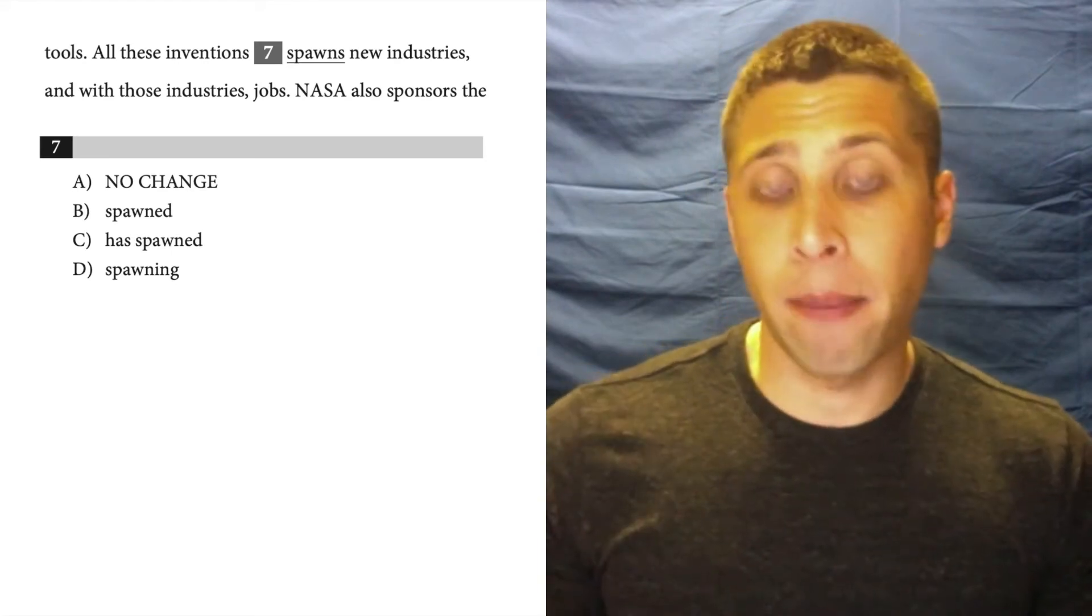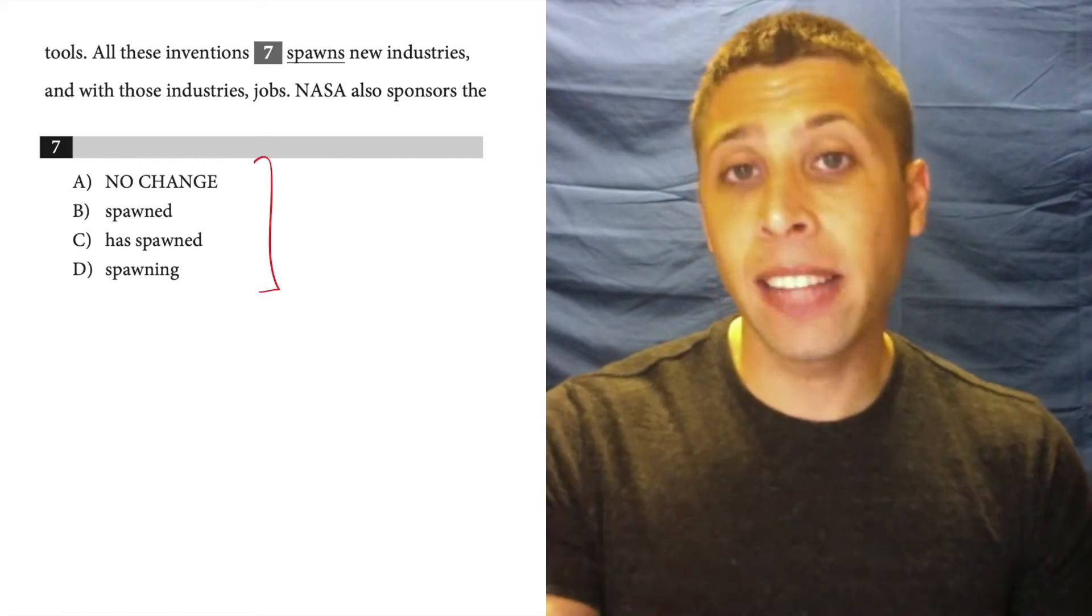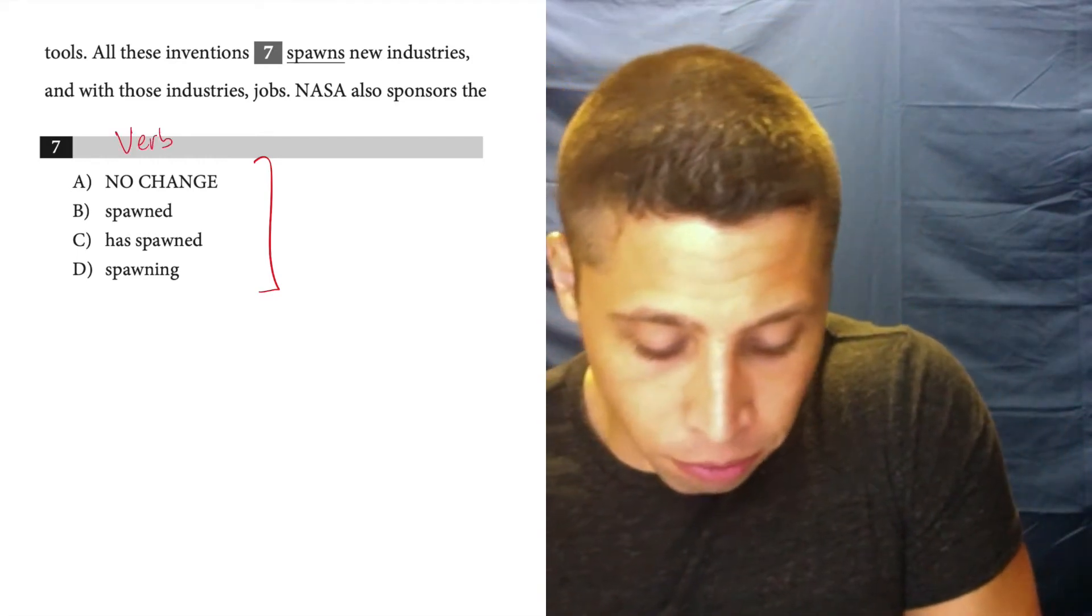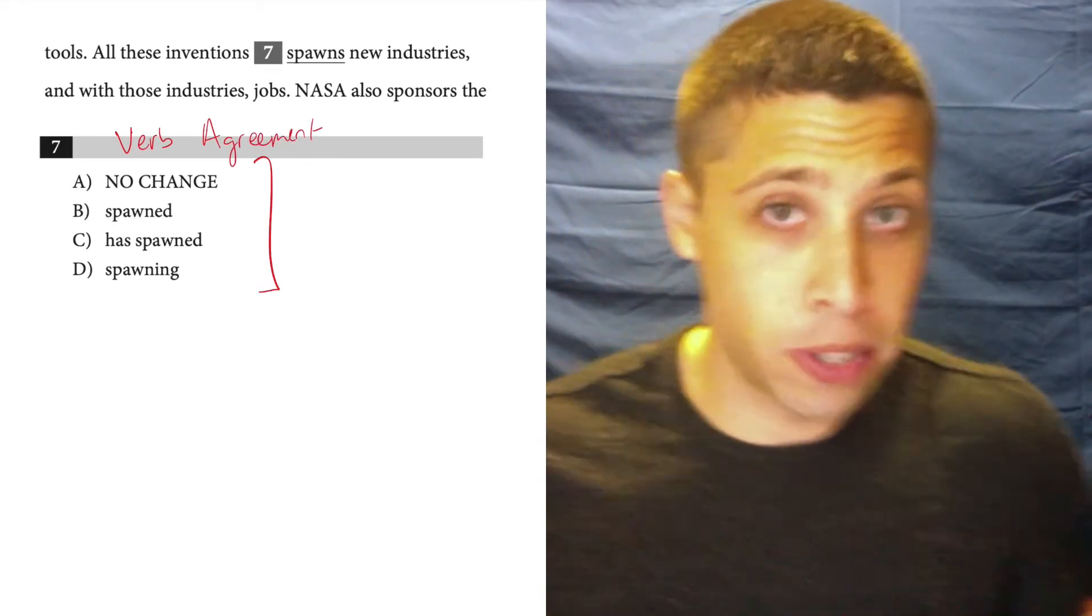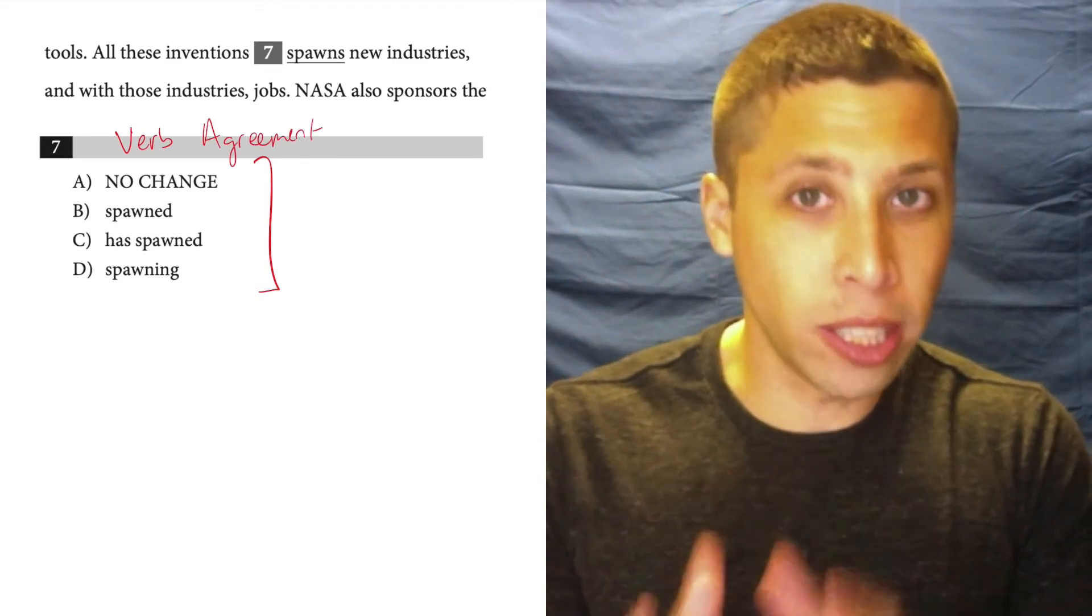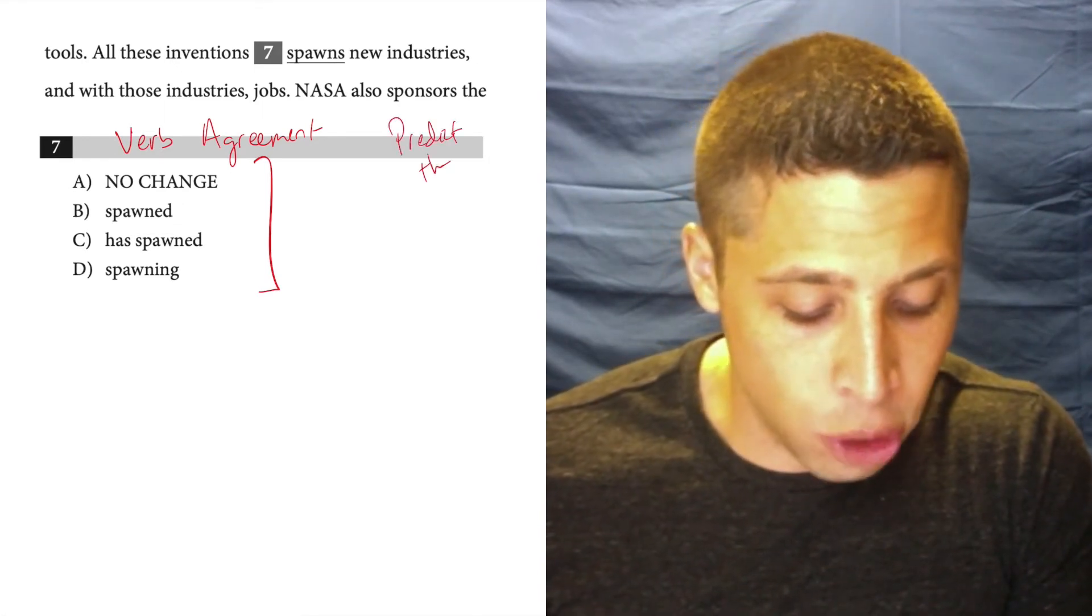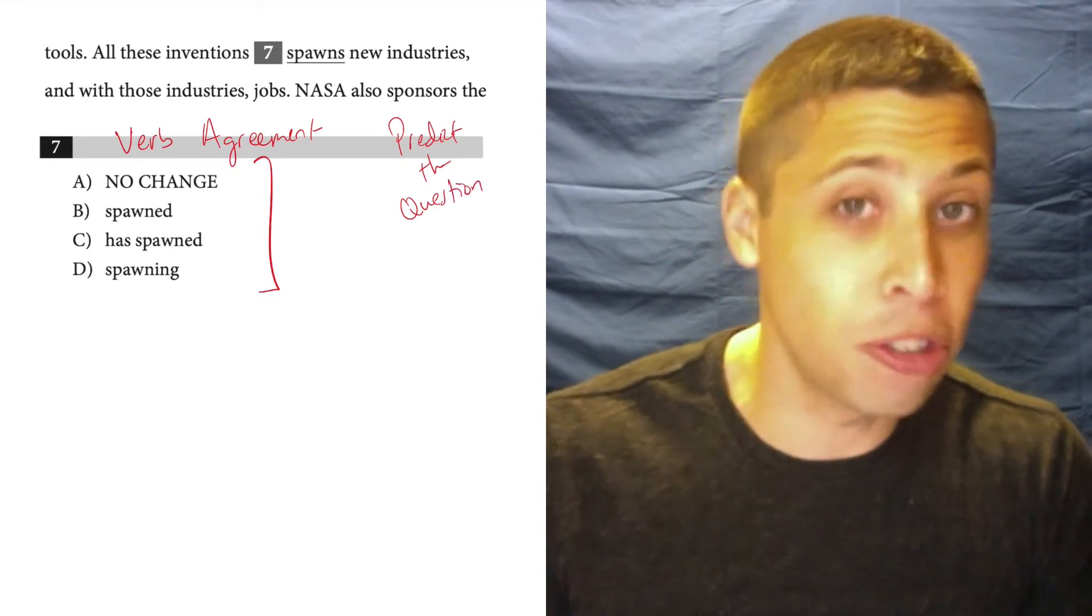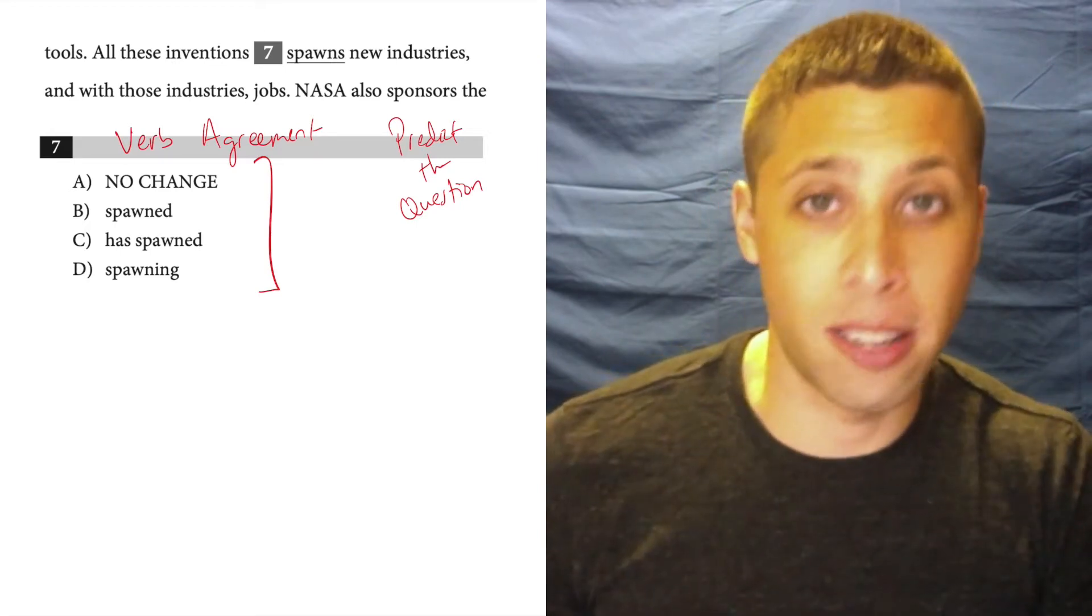Most of the time when we look at choices like this where we have a verb and then that verb is in different tenses, the first thing that we should check is verb agreement. This is what it means to predict the question. It means to look at the answer choices and to have a plan and then use that knowledge to start your process. You might need to change your plan, but at least we've got something to think about and we're not going into this sentence blind.